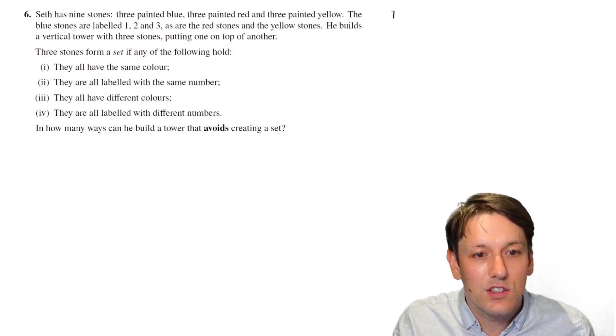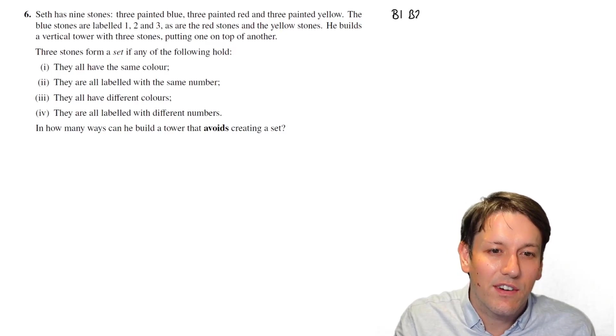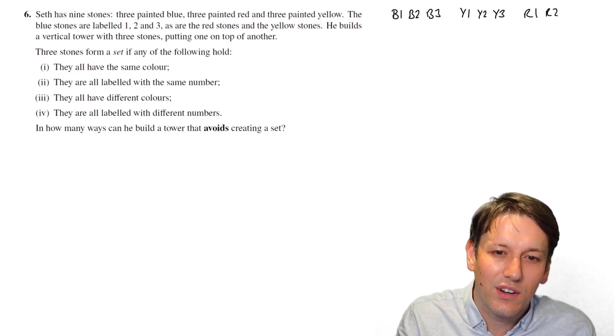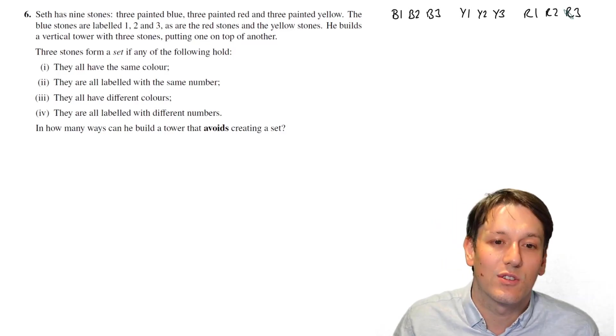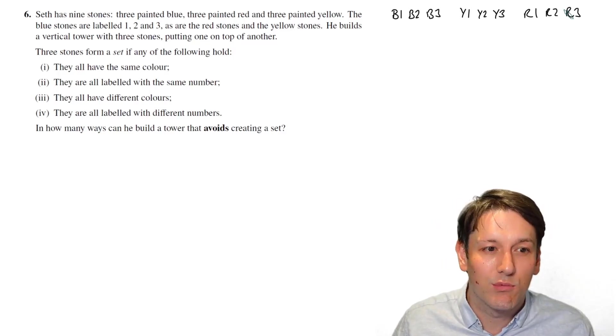Each of them are labelled 1, 2, and 3 as well. I'm going to just use the notation B1, B2, B3, Y1, Y2, Y3, and R1, R2, R3 to refer to those 9 stones. Blue 1, 2, and 3, yellow 1, 2, and 3, and red 1, 2, and 3.